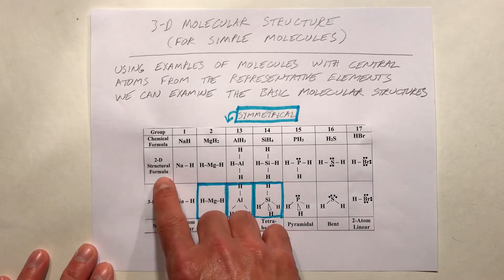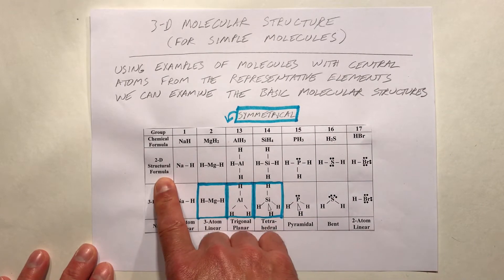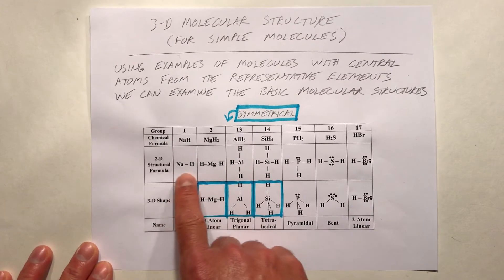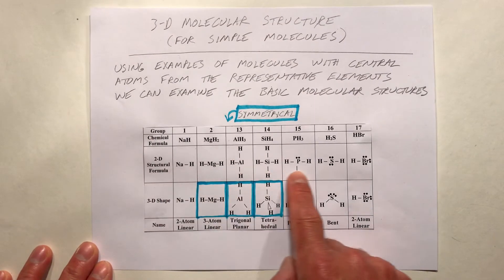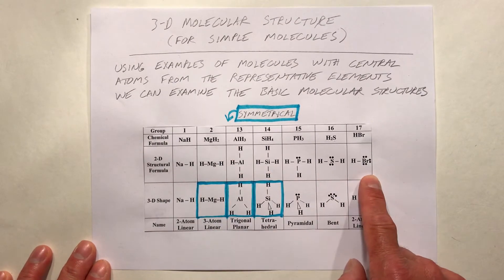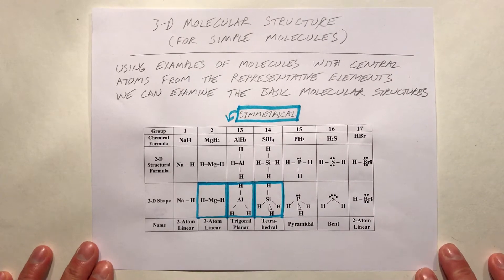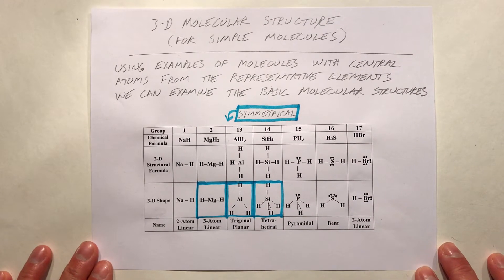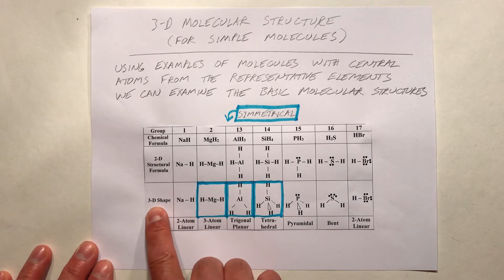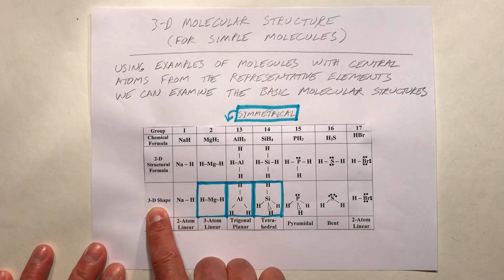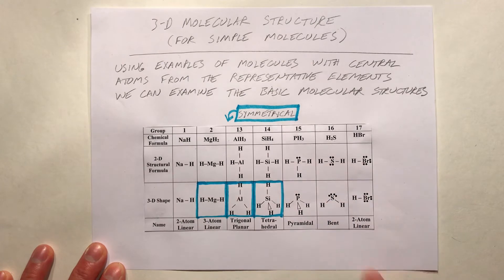The two-dimensional structural formulas, or Lewis structures, are something we've already done. We come up with Lewis structures by writing electron dot structures for the atoms and connecting the dots. Notice that the three-dimensional shapes for these molecules are different from the two-dimensional shapes.